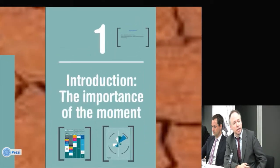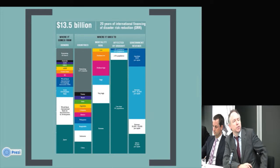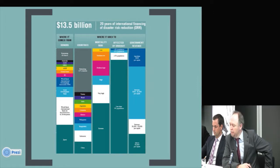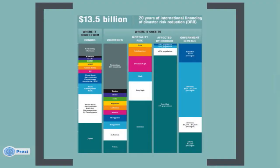Let me go straight into it and talk about the importance of the moment. There are three images here I'd like us to remember as we go through the data. The first, which you'd have seen in the report, is the entry graphic. I'd like us to focus on the big picture: $13.5 billion of disaster risk reduction from the international community from 1991 to 2010. I want to focus on where it goes — these four blocks to the right. About 50% goes to the top 10 recipient countries.